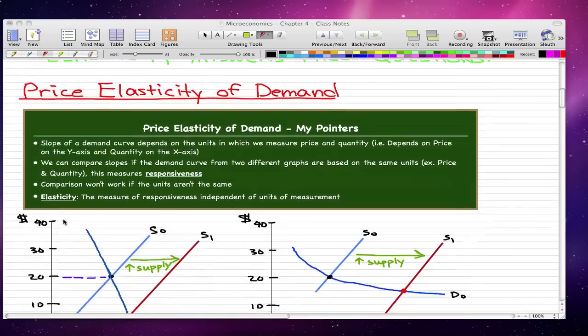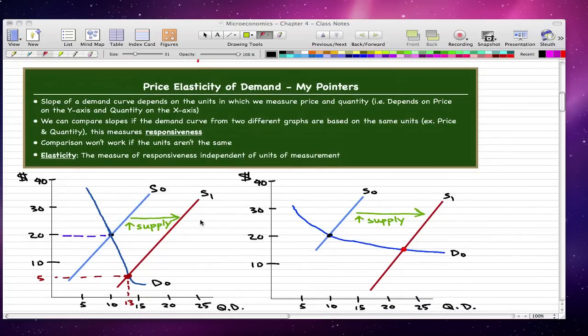The price elasticity of demand. These are my pointers, my notes that I've taken during my course. There are only four points that you really need to know. The slope of a demand curve depends on the units in which we measure price and quantity. That means the slope of our demand curve that we have here, for example, really depends on our x-axis being quantity demanded and our y-axis being price.